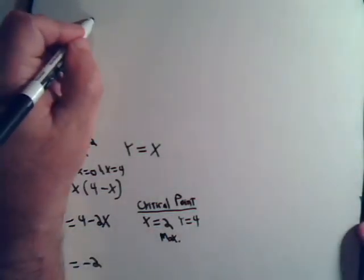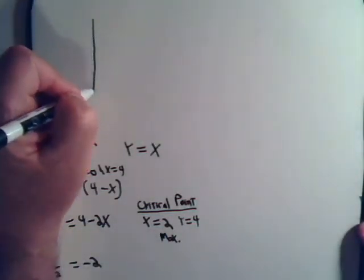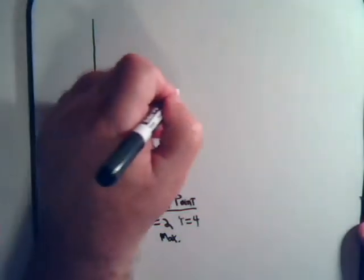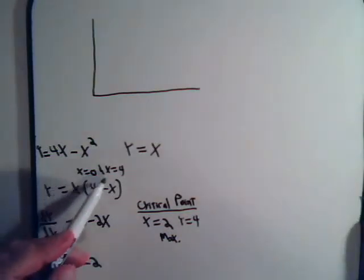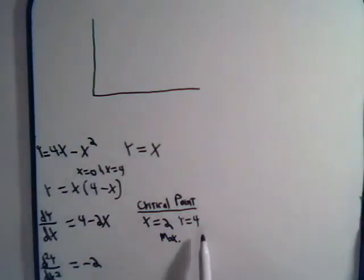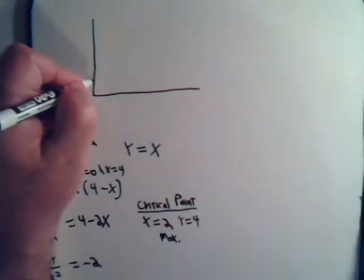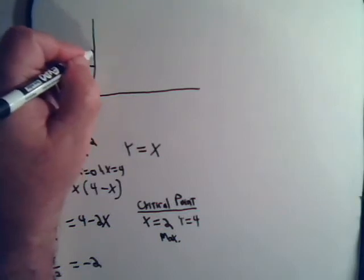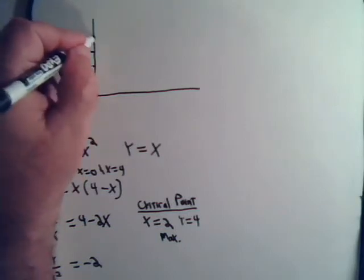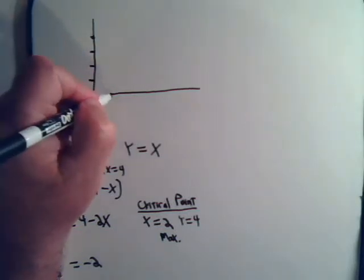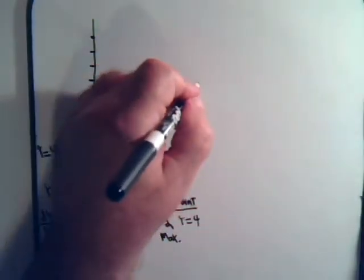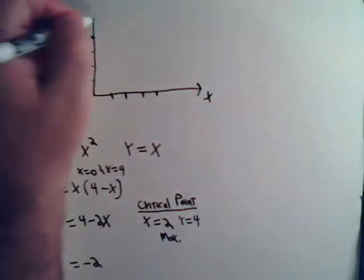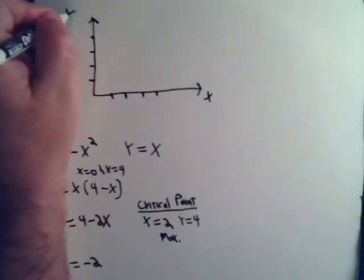So let's see what this is going to look like. We can get a rough curve of it anyway. It crosses the x-axis at x equals 0 and x equals 4, and its maximum height is when y equals 4. So it will be something like 1, 2, 3, 4. Of course, this is the x-axis, this is the y-axis.